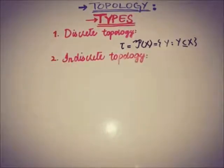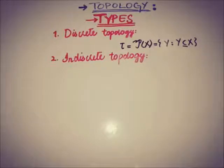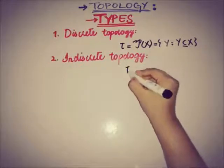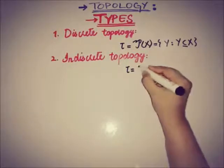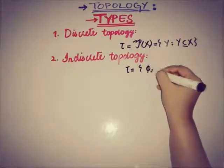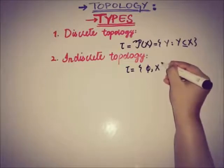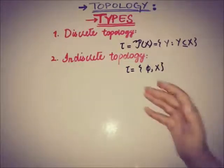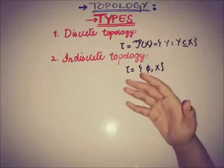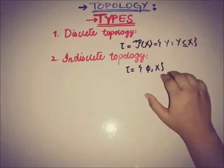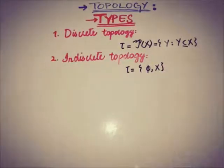The second type of topology is indiscrete topology. If X is any non-empty set and tau is a collection of subsets, and tau is of the form containing only the empty set and the set X itself, then this type of topology is known as indiscrete topology.